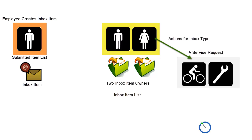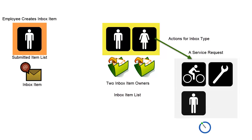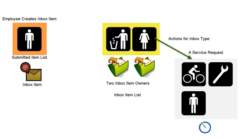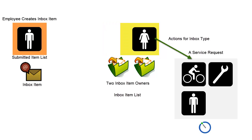Actions defined for the inbox type will allow inbox item owners to click from a drop-down. The drop-down will trigger a workflow which may, for example, change the assignment of the service request. Equally, the workflow may also manipulate the inbox item owners — for example, removing an inbox item owner so that now only one person sees it in their inbox item list.